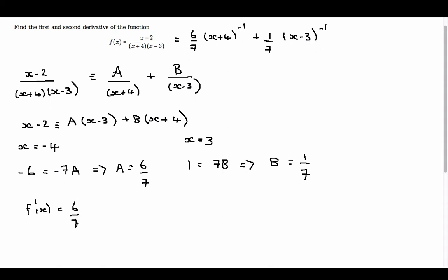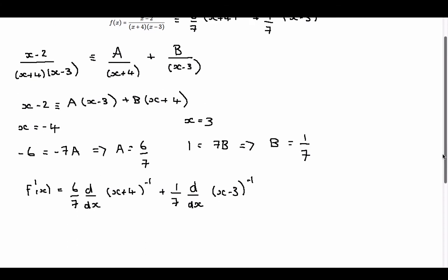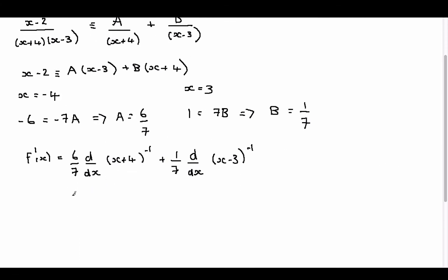We get (6 over 7) times the derivative of (x plus 4) to the minus 1, plus (1 over 7) times the derivative of (x minus 3) to the minus 1. Performing the differentiation — bringing the power down the front and taking one off the power — we get minus 6 over 7 times (x plus 4) to the minus 2. In the second term, we get minus 1 over 7 times (x minus 3) to the minus 2.